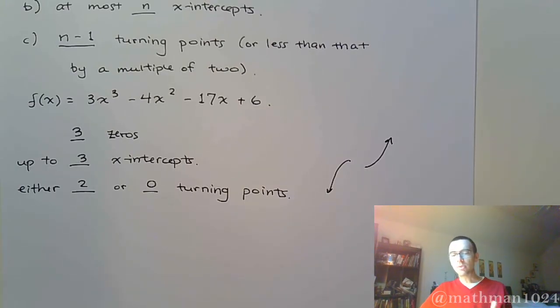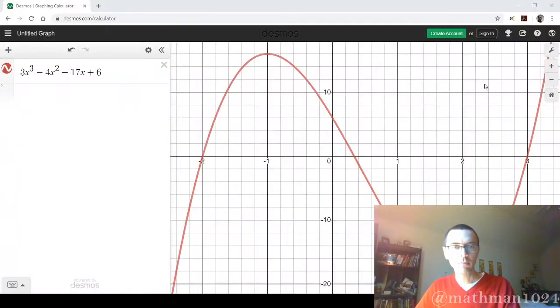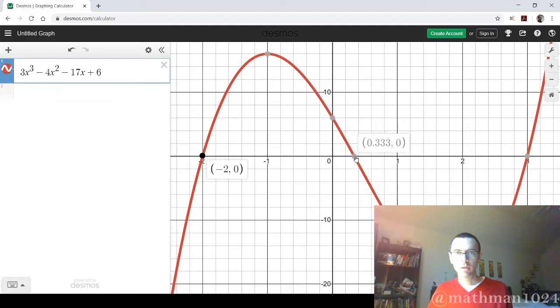So, I've already pulled up the graph for this in Desmos. So, let's see how it all works out. So, here in Desmos, you can see that we have one, two, three x-intercepts. We were told that we could have up to three x-intercepts, so we totally do. And each of those corresponds to a real zero.